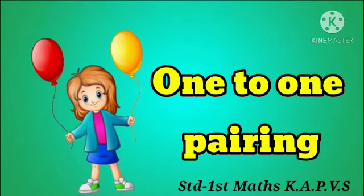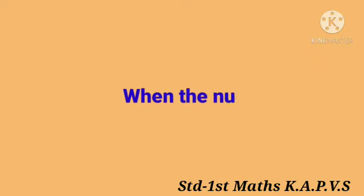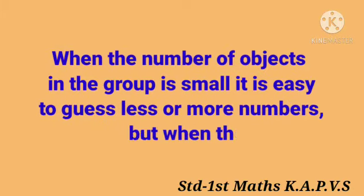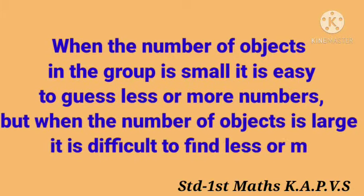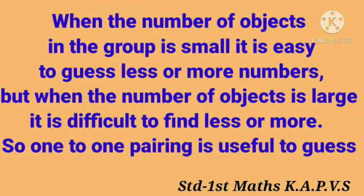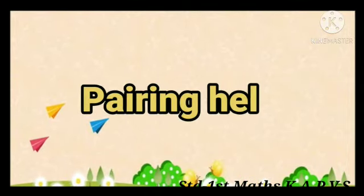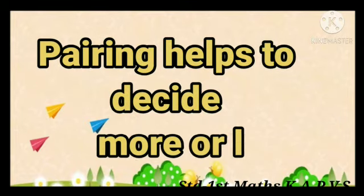Let's find less and more groups by one-to-one pairing. When the number of objects in the group is small, it is easy to guess less or more. But when the number of objects is large, it is difficult to find less or more. So one-to-one pairing is useful to decide which group is less or more.